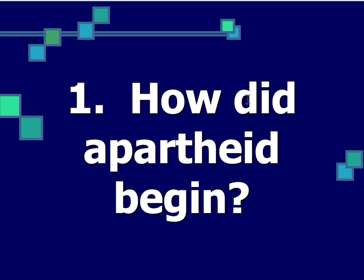The rules of apartheid meant that people were legally classified into a racial group — the main ones being black, white, colored (which would be mixed race), and Asian (either Indians or Pakistanis). Each group was separated with different laws they had to follow.